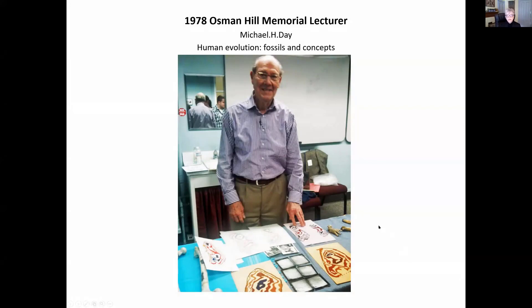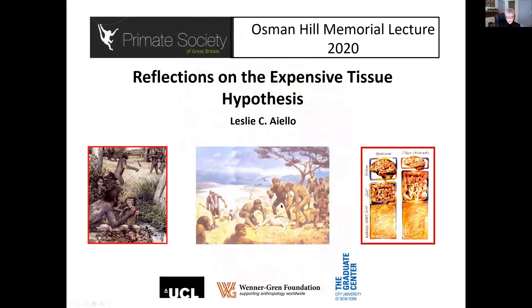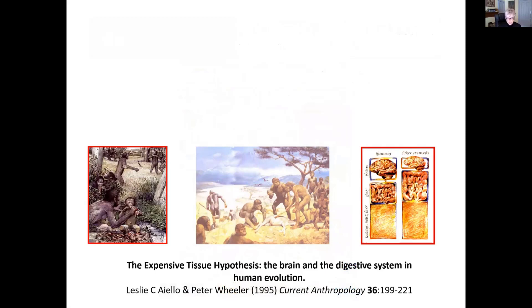It's a particular pleasure for me to receive the award this year. The reason is that it had been given to my PhD advisor, who was the first Osmond Hill awardee in 1978. He was Michael Day, and his lecture was on human evolution, fossils, and concepts. For those of you who didn't know Michael, he was president of PSGB from 1976 to 1979.